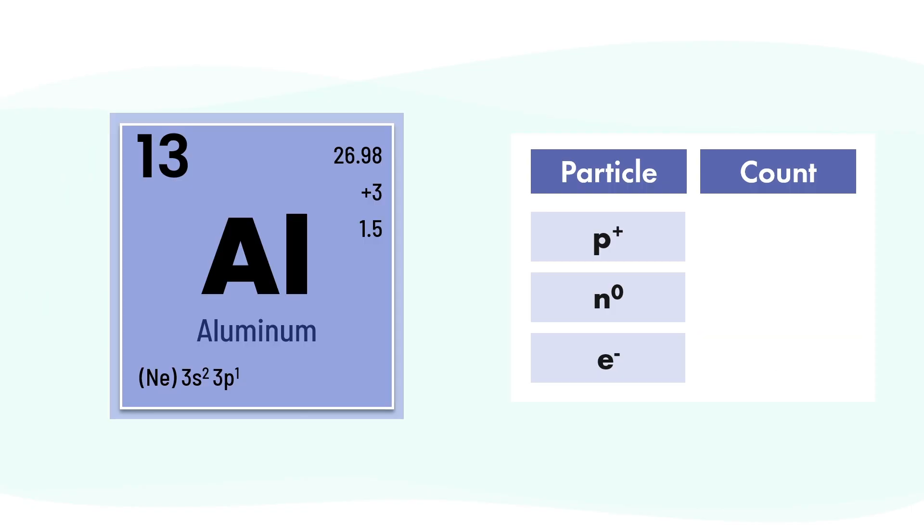Now let's look at a different format: the full element tile you'd see on the periodic table. Here's the element aluminum, and we'll use it to fill out our particle table again. But this time, we're starting with the tile, not isotope notation. On the tile, you might also see extra details like atomic mass, oxidation states, electronegativity, and electron configuration depending on the table.